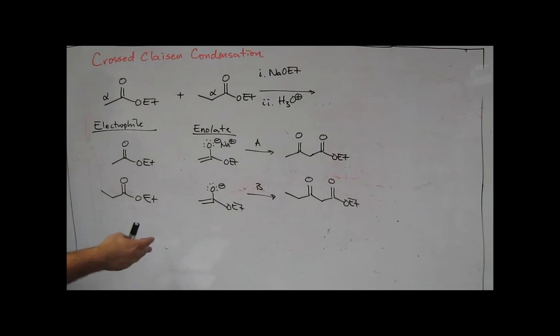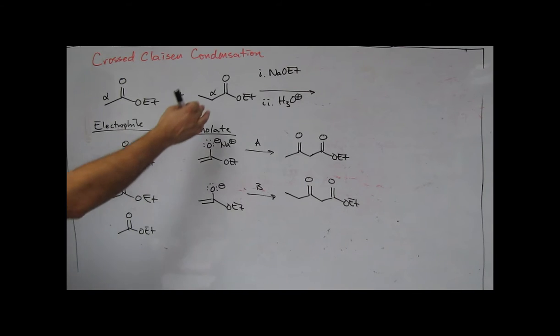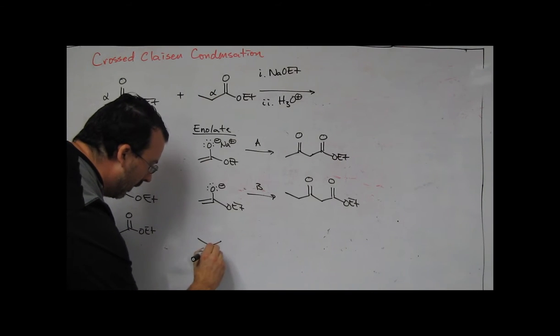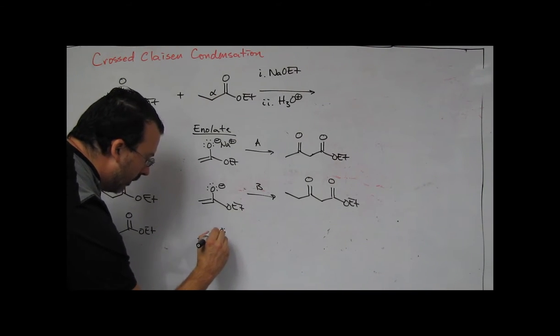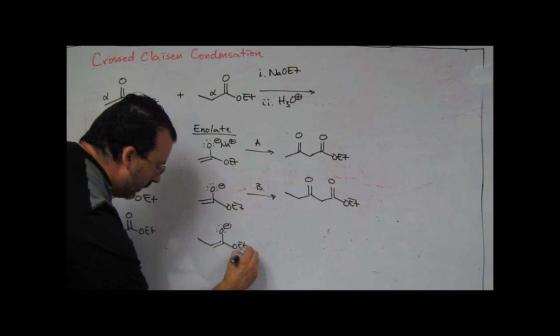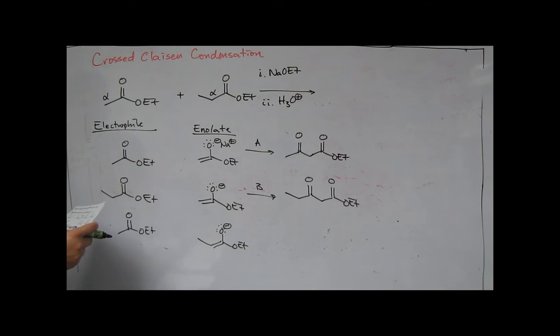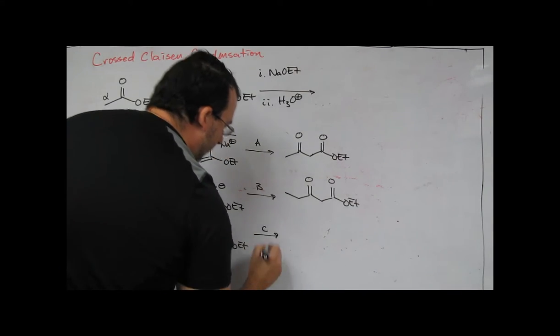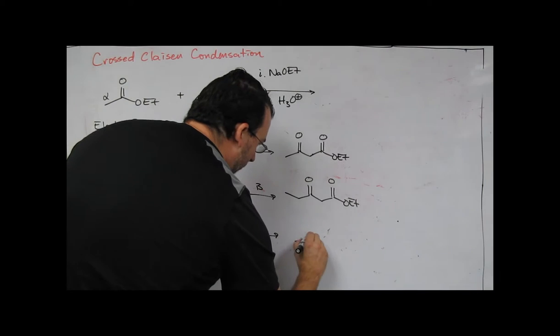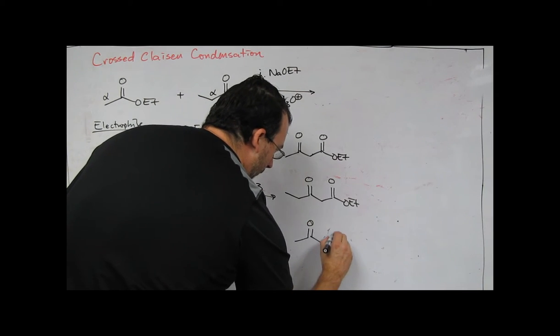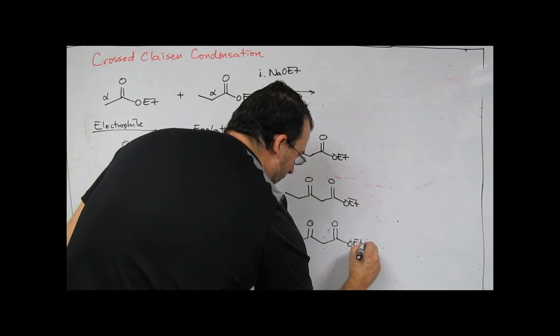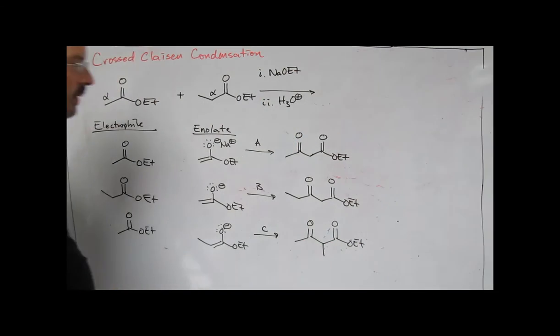So in the next two examples that we're going to show, the enolate is going to change. And then we'll use these electrophiles here. So ethyl acetate, that's going to now react with the enolate of this compound. We'll call this product C. So notice now the alpha carbon is bearing a methyl group.